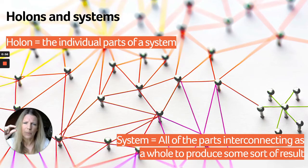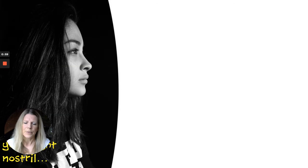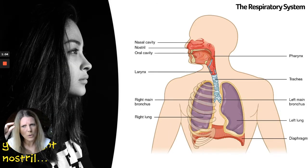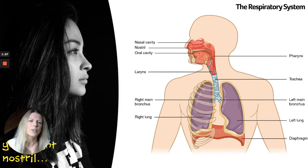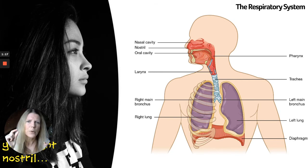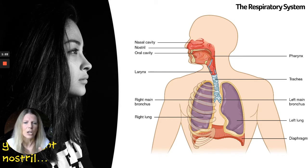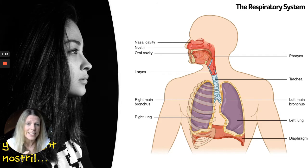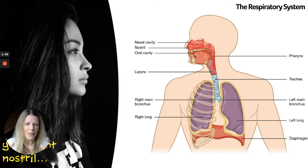We've got holons, small parts, and systems, which are whole parts. For example, your right nostril is one part, one small part, one holon of the respiratory system. The respiratory system is the functioning of how we breathe, and it's made up of lots of small parts, lots of individual holons. When you put all of them together — the right nostril, the nasal cavity, the oral cavity, the pharynx, etc. — you create the respiratory system, the whole system which has the effect of allowing us to breathe. You put those bits together and something happens when they all come together.